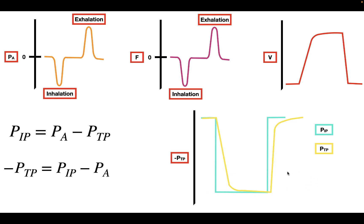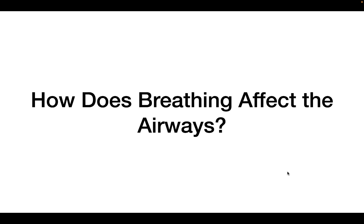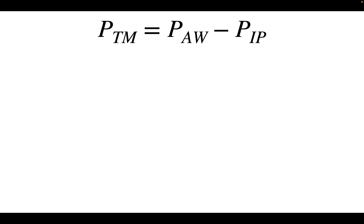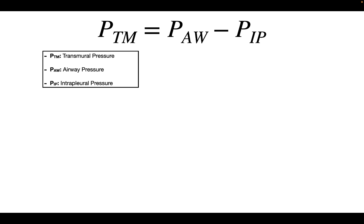The difference between any two corresponding points on those curves is going to be equal to the alveolar pressure. Now, how does breathing affect the airways? We're going to see how breathing affects the airways — whether they expand or collapse — and we do that using the transmural pressure equation.